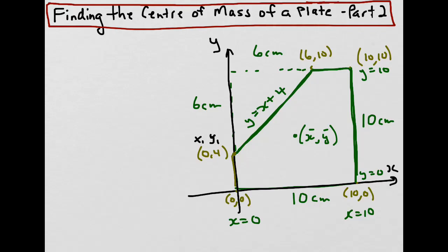Now that we have the equation of all the boundary lines of our plate, the next thing to do is find the area of the plate. The reason we do this is because area is part of the formula for finding the center of mass.